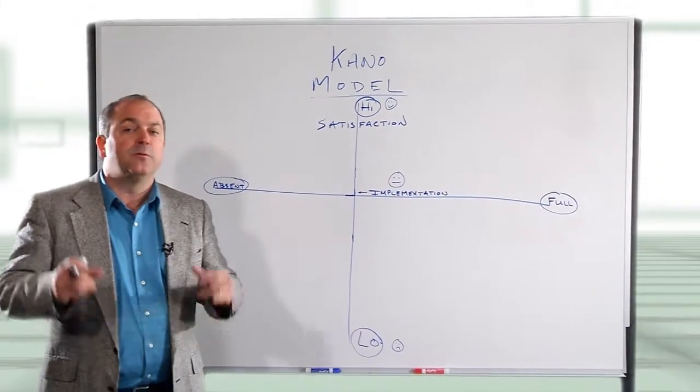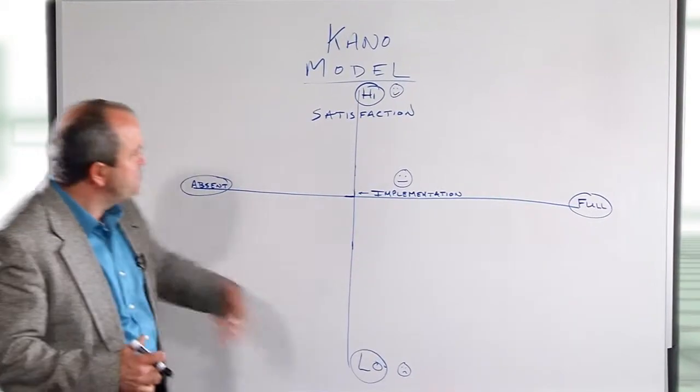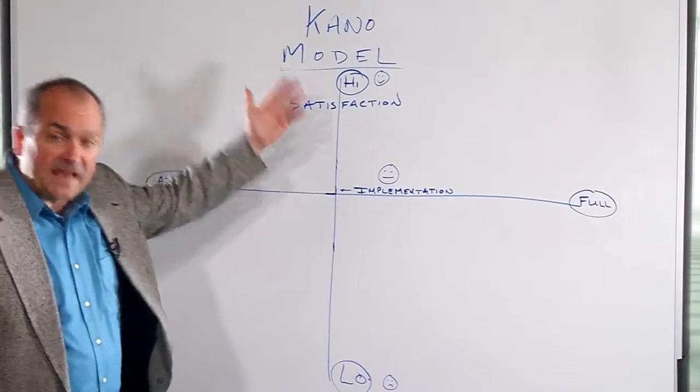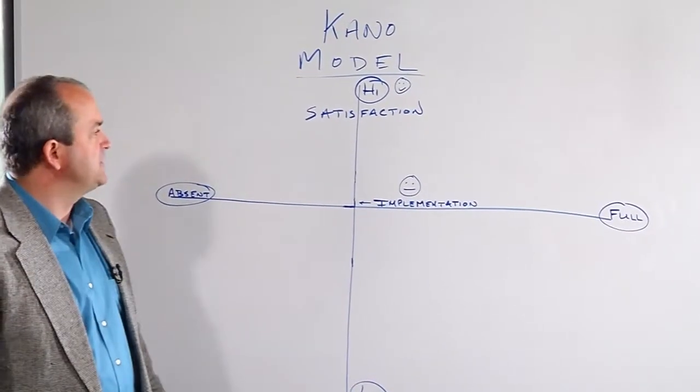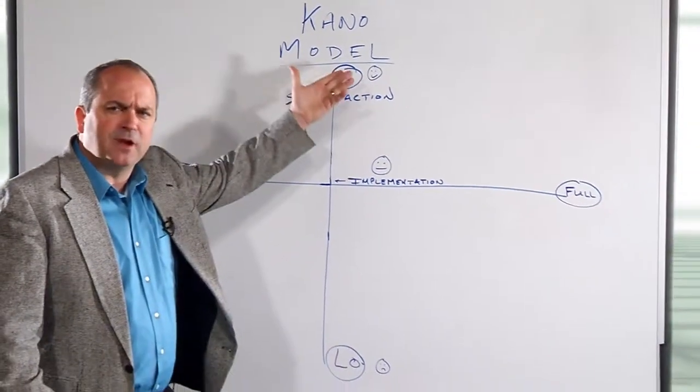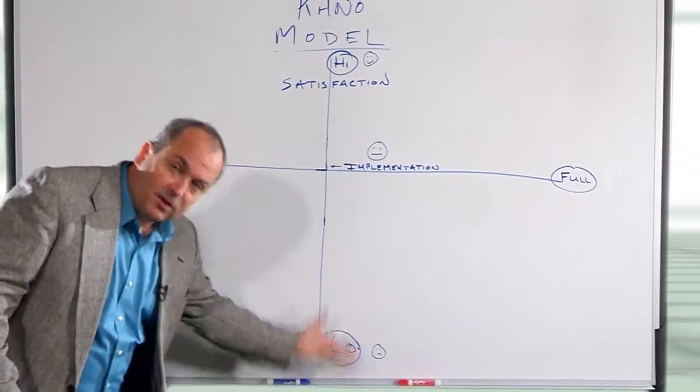The Kano model was named after Professor Noriaki Kano. The model was drawn like this where the vertical axis is the degree of satisfaction, the degree of customer satisfaction. The very highest end with a smiley face, that's a high degree of customer satisfaction. On the lower end, of course, that's a low degree of customer satisfaction.